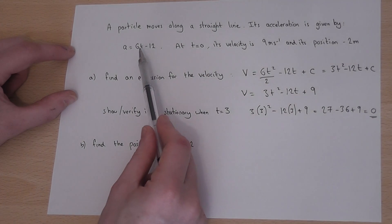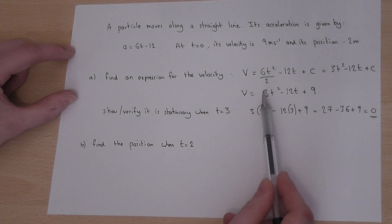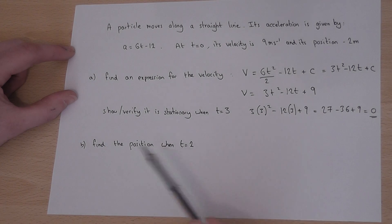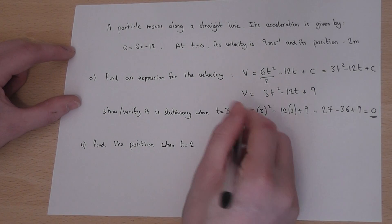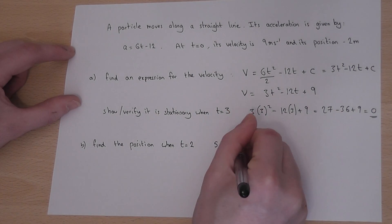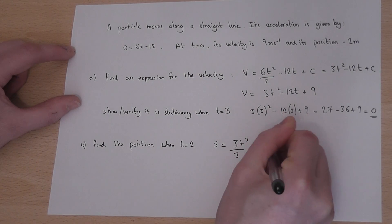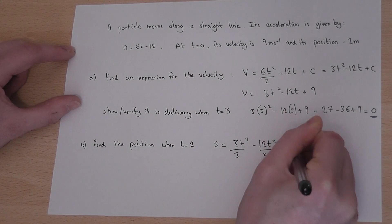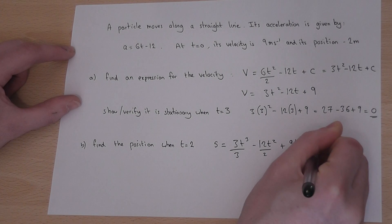We've gone from acceleration to velocity by integrating. To then get to position, we integrate again. So position, which we'll write down as s, is equal to 3t cubed over 3, take away 12t squared over 2 plus 9t plus c.